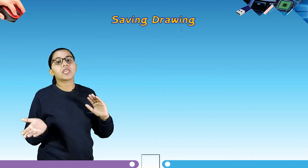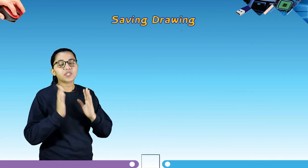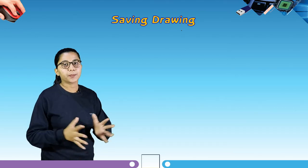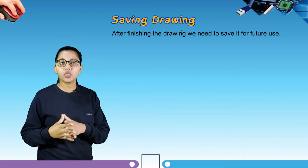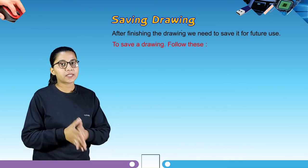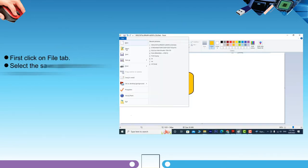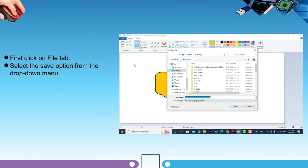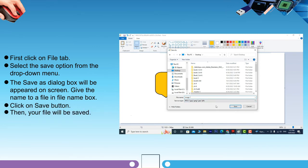After finishing and making all the changes to your drawing and coloring, you need to save your drawing for future use. To save a drawing: click on the file tab, select the save option from the drop-down menu. The save as dialog box will appear on screen. Give the file a name in the name box, then click on the save button, and your file will be saved.